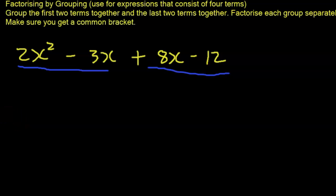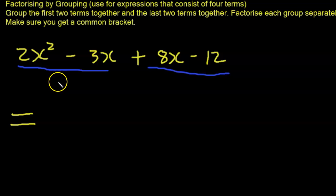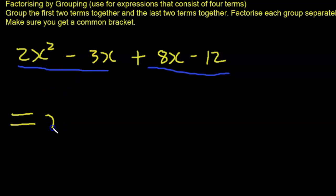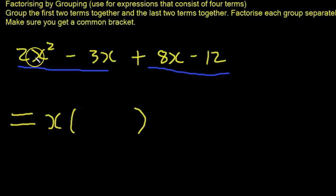Let's focus on the first pair of terms: 2x² minus 3x. We ask ourselves, what is the common factor? The common factor for 2 and 3 is 1, and we have x in both terms — x² and x — so the common factor here is x. Now we need to determine what to put inside the bracket.